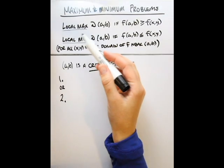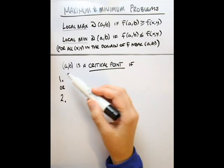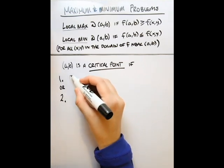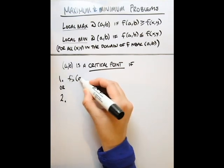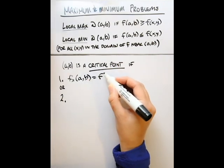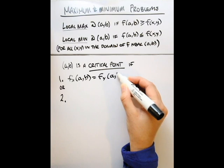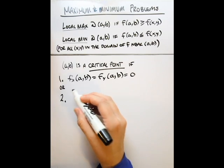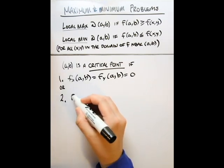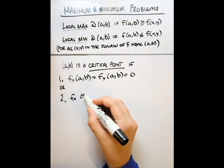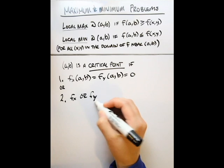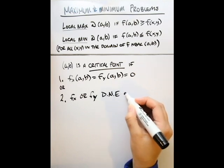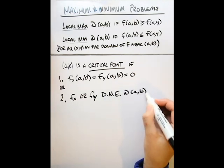In order to find our local max or min, we need to find the critical points of our function. This can occur in one of two ways. The first way is if the partial derivative with respect to x at that point equals 0, and the same for the partial derivative with respect to y. If either or both of these are 0, it could be a critical point. Similarly, we can have a critical point if either of these partial derivatives does not exist — if f_x or f_y does not exist at that point, it is also considered a critical point.